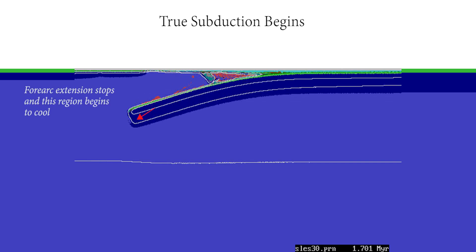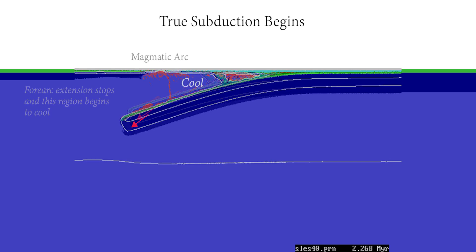Once true subduction begins, seafloor spreading in what becomes the forearc stops and the underlying mantle begins to cool. As subduction continues, the magmatic arc begins to form about 100 kilometers above the subducting slab.